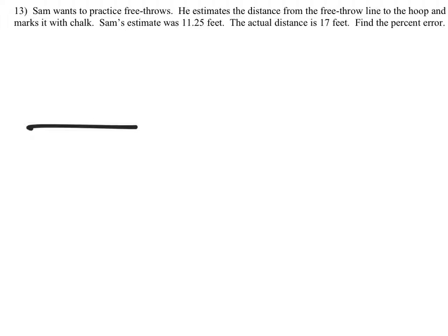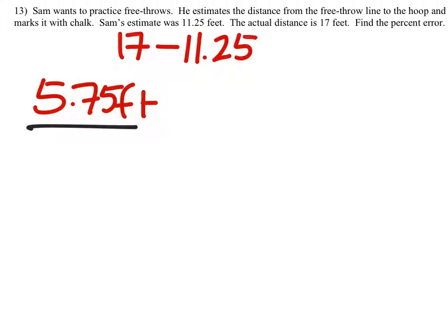In this fraction, the numerator will be how far off his estimate was, which looks like it is 5.75 feet. We get that by taking the 17 feet that it is and subtracting the 11.25 estimate. The only reason we subtract the 11.25 is because it's smaller. We just want to find out how far off he was.